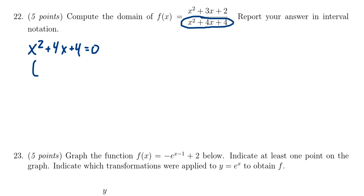x² + 4x + 4 is actually a perfect square trinomial that factors as (x + 2)². Taking the square root, you get x + 2 = 0, so x = -2. That's the forbidden value.